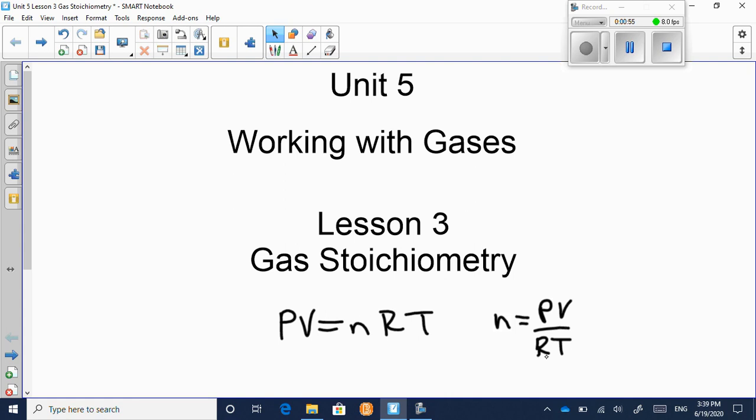We've always got those other formulas: n is equal to little m over capital M, n is equal to capital N over NA, and n is equal to C times V. So we've now got four different ways of calculating our moles, depending on the form that we're given in the question.